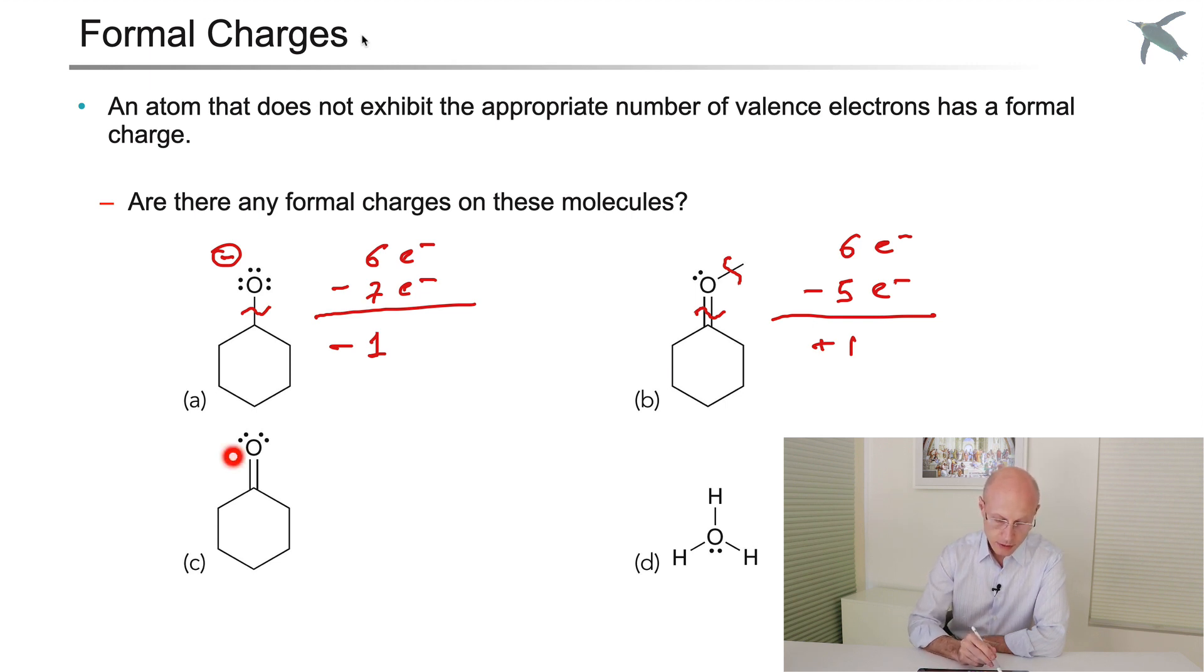If you look at the oxygen in cyclohexanone, it has six electrons. And if you look at the hydronium ion, if you go through the same mechanism, it will have a positive charge. That's relatively easy.